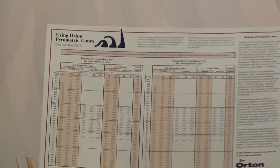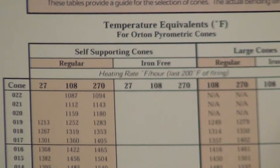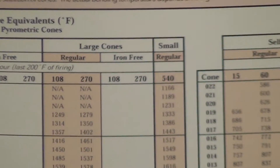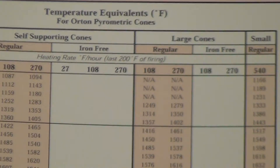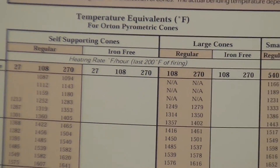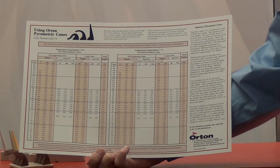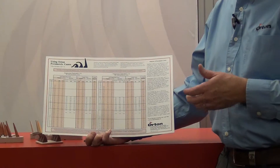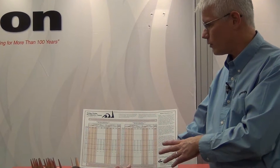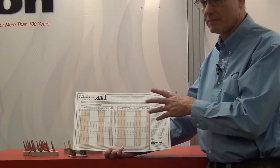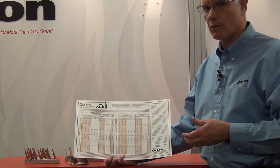One of the questions we get often on this chart is: what do these numbers at the top of these columns mean? We have these numbers here — 27, 108, and 270. What that is referring to is the rate of temperature increase that you're using to fire your ceramic product. We like to tell people who are confused about this to just take those numbers away and replace them with the words slow, medium, and fast, and that will give you an idea of how that works within your system.